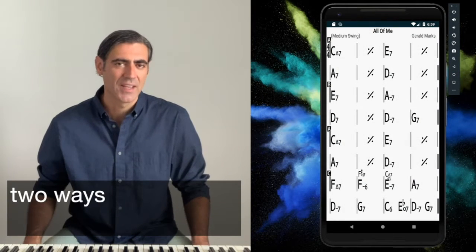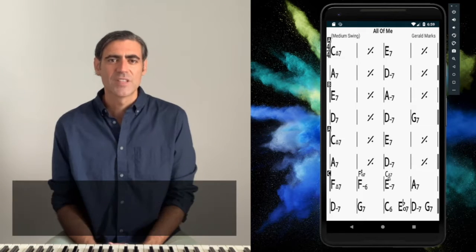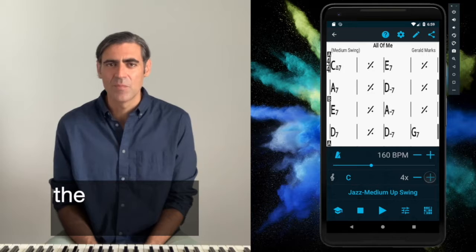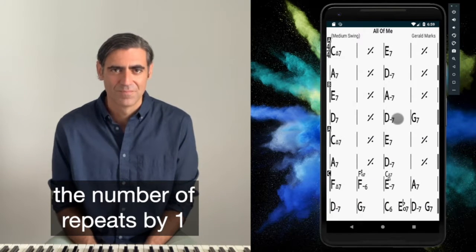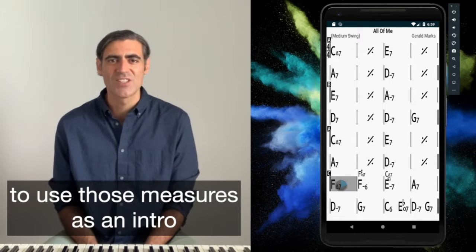With iReal Pro there are two ways of adding an intro to a song. The first one is very simple. For example, let's take All of Me and start by increasing the number of repeats by one. Then let's start playback eight measures from the end to use those measures as an intro.